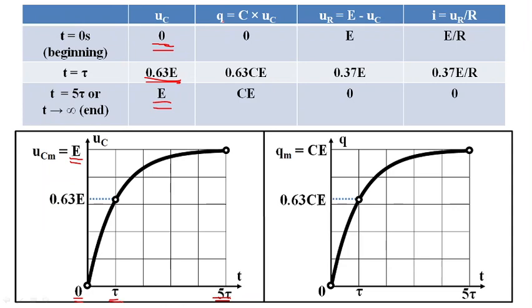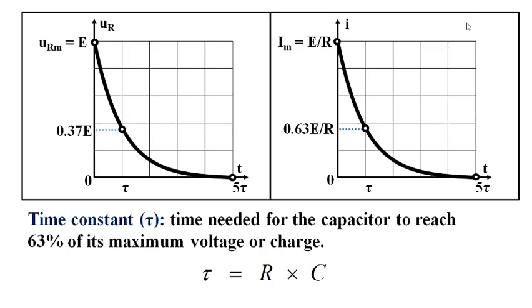How do we see Q? By applying this rule, Q equals CUC. U-resistor by applying the law of addition, E equals UR plus UC. Therefore, UR equals E minus UC. And the current by Ohm's law, I equals UR divided by R. The time constant tau here is the time needed for the capacitor to reach 63% of its maximum value. In the videos, we will see why UC is 0.63E and why tau equals RC.